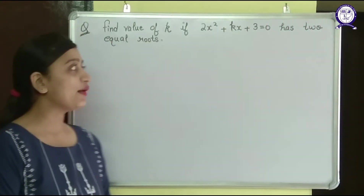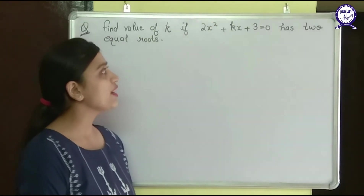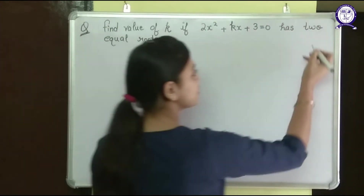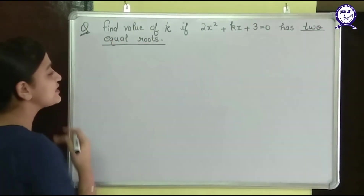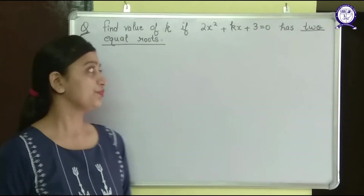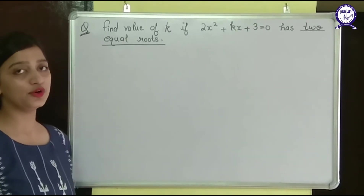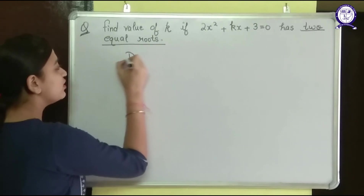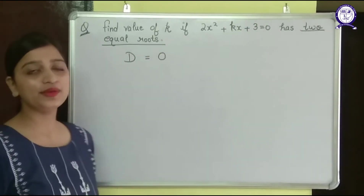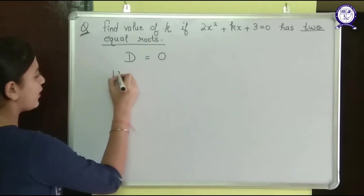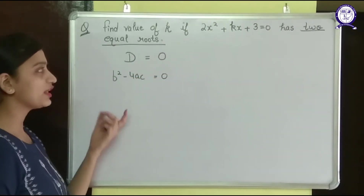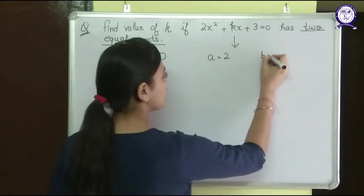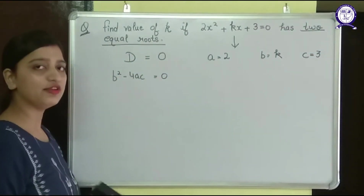Now let's take one more example. In this question: find the value of k if 2x squared plus kx plus 3 equals 0 has 2 equal roots. It is given that it has 2 equal roots. In this type of question, you will use the discriminant formula. When the equation has 2 equal roots, the discriminant is equal to 0. So b squared minus 4ac will be equal to 0. Here, a is 2, b is k, and c is 3.